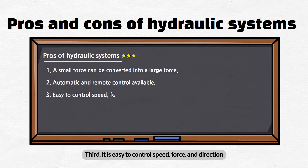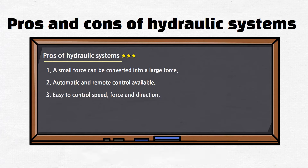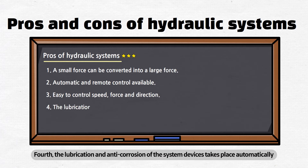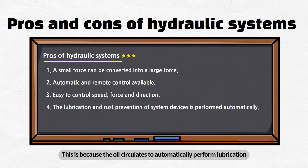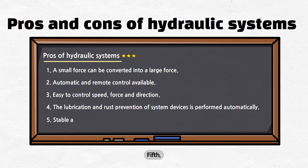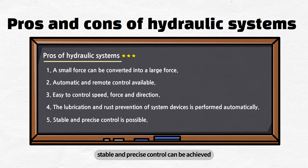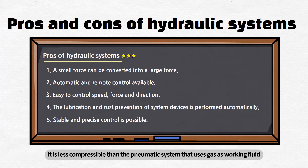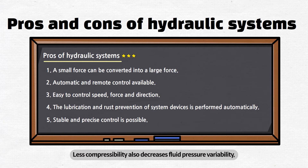Third, it is easy to control speed, force, and direction. Fourth, the lubrication and anti-corrosion of the system devices takes place automatically, because the oil circulates to automatically perform lubrication and anti-corrosive actions on the system devices, thereby effectively reducing wear and corrosion problems. Fifth, stable and precise control can be achieved. As liquid is used as working fluid, it is less compressible than the pneumatic system that uses gas as working fluid. Less compressibility also decreases fluid pressure variability, ensuring more precise control.